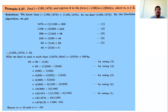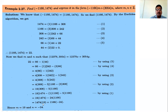Therefore the Greatest Common Divisor of these two numbers is 22, and hence GCD(-1166, 1474) is also 22. Now we need to find m and n such that this expression equals 22. First express 1474 and 1166 in this form using back-substitution.